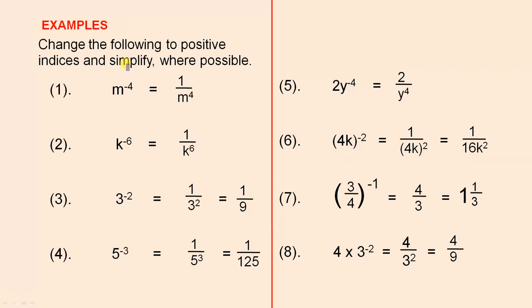Change the following to positive indices and simplify where possible. m to the power of minus 4 is 1 over m to the 4. All you do is you go 1 over, and you make that a positive. Of course, it was a negative here, but when you do 1 over, that becomes positive. Same here. k to the power of negative 6 is 1 over k to the power of 6. We can't do any simplification, so we just leave it like that.